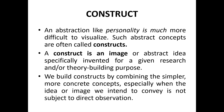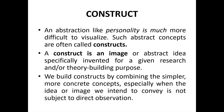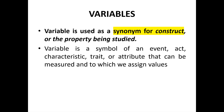So these were some of the key terms — variables, concept, and constructs. Variable examples include return on investment and market share. Concept examples include marketing concepts, organizational concepts like leadership, and constructs in abstract form. Abstract concepts are called constructs, like personality. Variable is used as a synonym for construct — in your study or research, variables can be used as a synonym for your construct or the property being studied. A variable is a symbol of an event, act, characteristic, trait, or attribute that can be measured and to which we assign values.